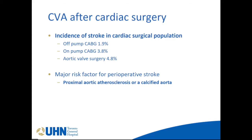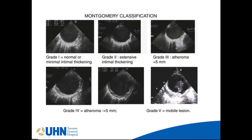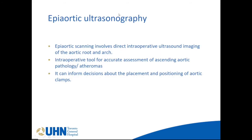The next topic is epiaortic scanning. Before that, cerebrovascular accident or stroke after cardiac surgery is a significant event. The incidence in surgical populations: off-pump surgery 1.9%, on-pump CABG 3.8%, aortic valve surgery almost 5%. One of the major risk factors for perioperative stroke is proximal aortic atherosclerosis or a calcified aorta. We always look for this in the descending aorta using the Montgomery classification, but more importantly we use epiaortic ultrasound.